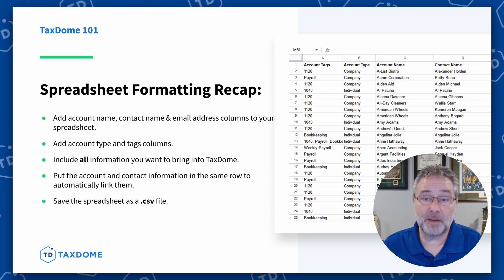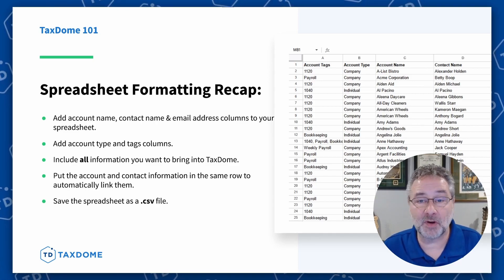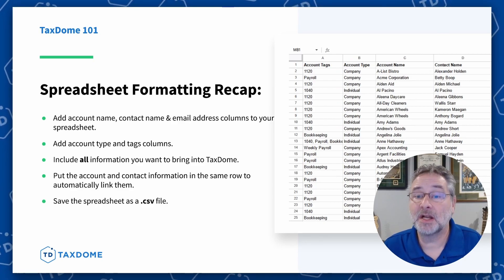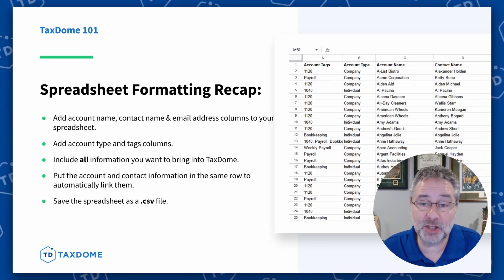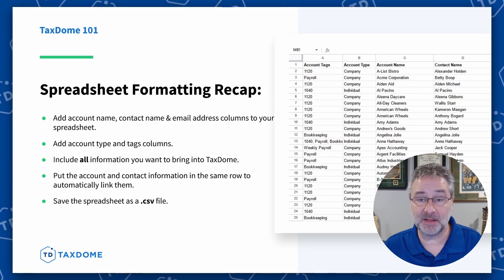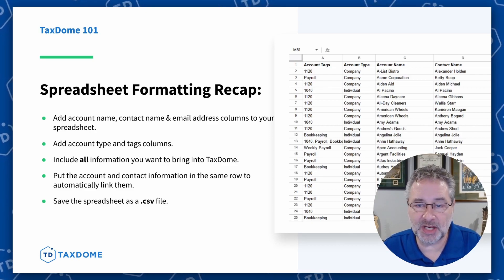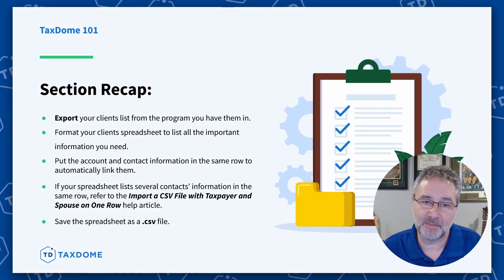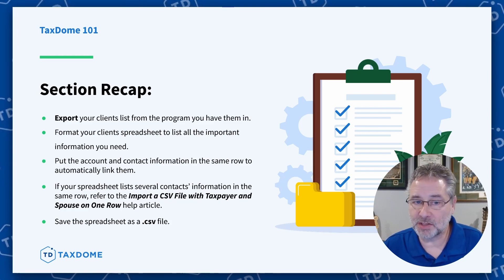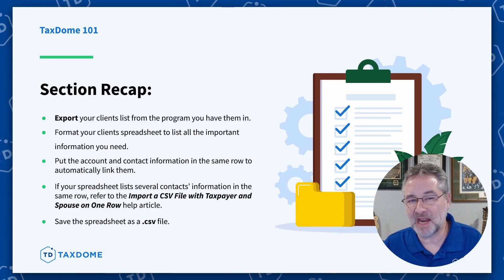Let's quickly reiterate the key points. Make sure you have columns for account names, contact names, and email addresses. Add account type and account tags columns to categorize your clients. Add columns for any other information you want to bring into TaxDome since you can add as many fields as you like. Keep the account and contact names in the same row for them to be automatically linked during the import. And don't forget to save your spreadsheet as a CSV file. That was a lot to take in, so we're going to take a quick break. If you have any questions, let us know in the Q&A section. Once I'm back, we'll go through the rest of the import process.